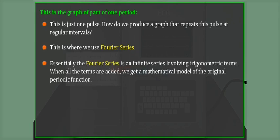Essentially, the Fourier series is an infinite series involving trigonometric terms. When all the terms are added, we get a mathematical model of the original periodic function.